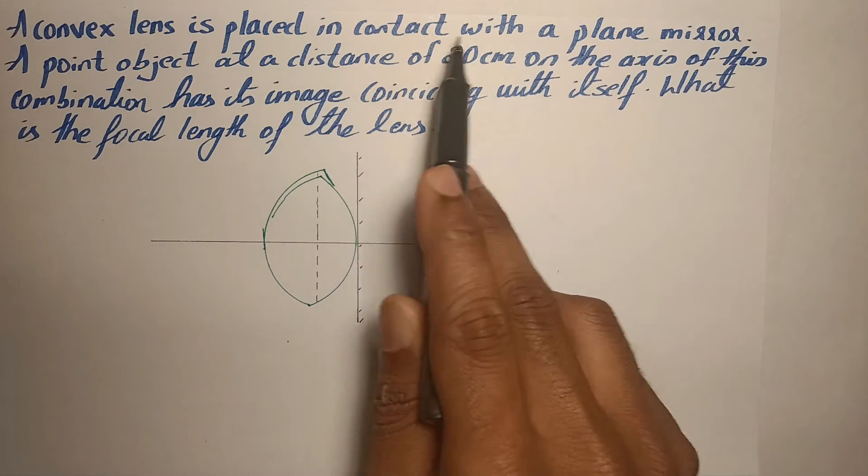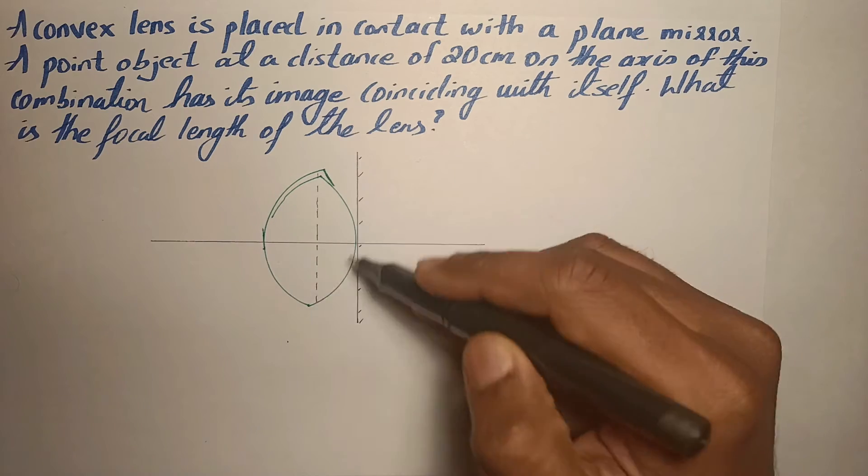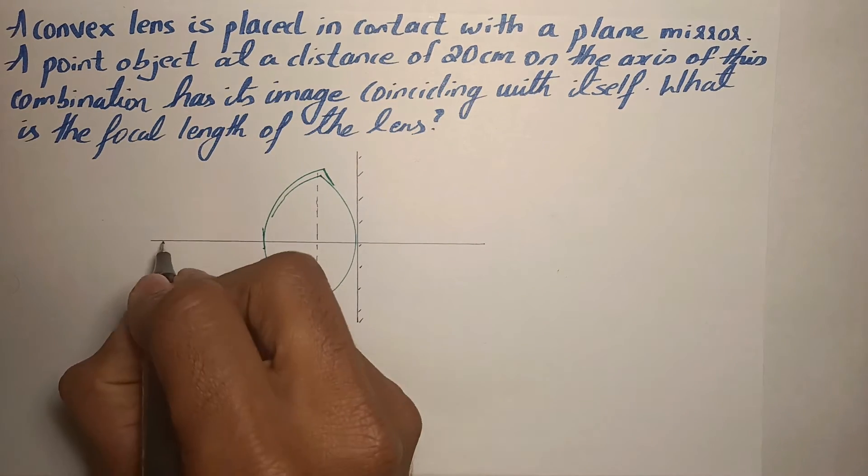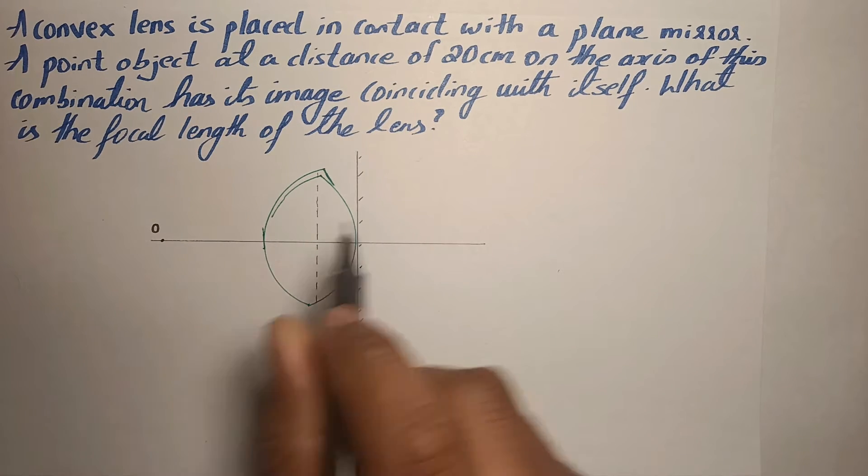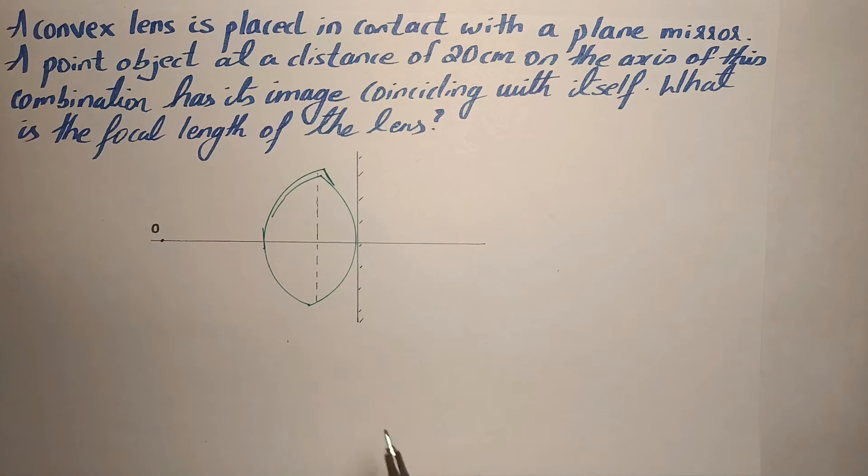A convex lens is placed in contact with a plane mirror. So there is a plane mirror and in contact with that a convex lens is placed. A point object is at a distance of 20 centimeter on the axis of this combination.